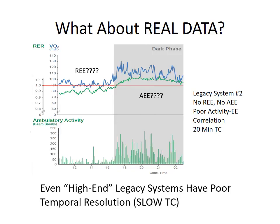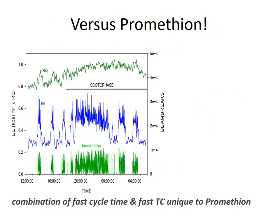Now that we have shown that the high-end legacy systems, both mathematically modeled and in real life, have poor temporal resolution, let's look at Prometheon. This is what a typical Prometheon metabolic record looks like — and as you can see, it looks completely different. Notice the very good correlation between activity in green and metabolic rate in blue. So we have excellent resolution of resting energy expenditure. There is no need to do the mathematical trickery required with legacy systems where you graph activity along the x-axis, energy expenditure on the y, and extrapolate back to zero activity. Here, you read it right off the graph because of the high temporal resolution of the system.